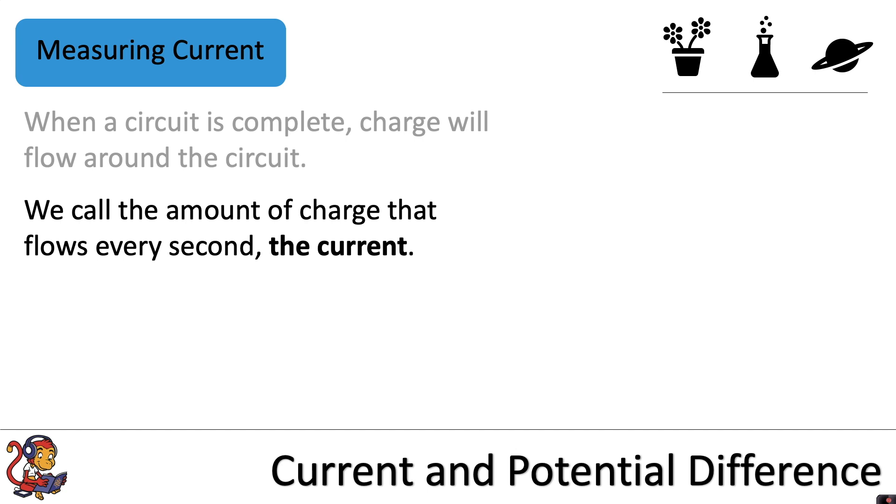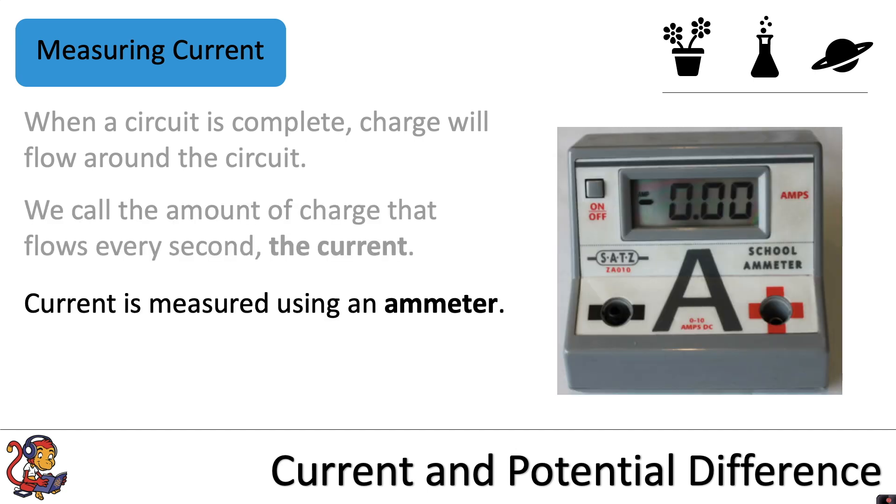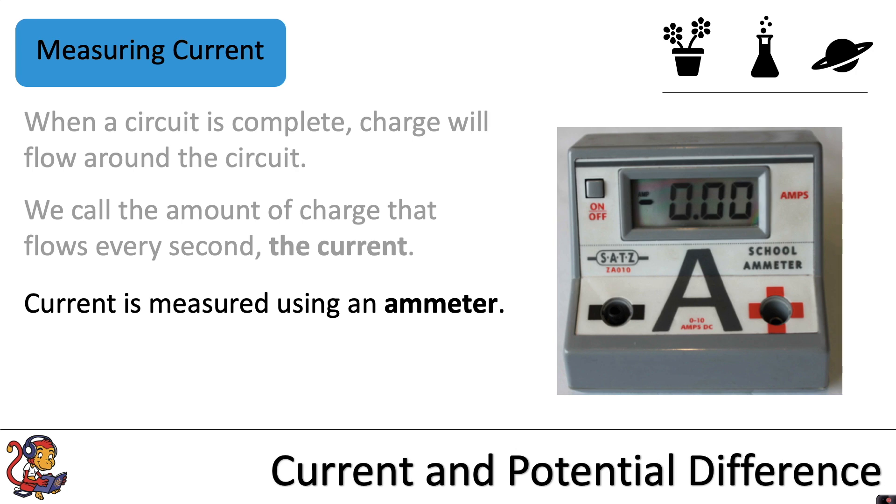We call the amount of charge that flows every second the current. Current is measured using an ammeter. The unit for current is amperes or amps or a capital A for short.